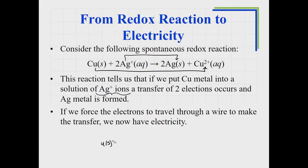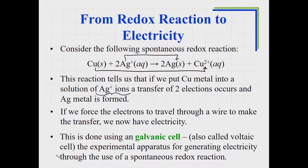To extract electricity, we need to force those electrons to travel through a wire in order to get from one place to the other instead of transferring right at the interface. That's what a galvanic cell or voltaic cell does — it takes a spontaneous reaction like this one and makes the electrons flow through a wire to complete the transfer.